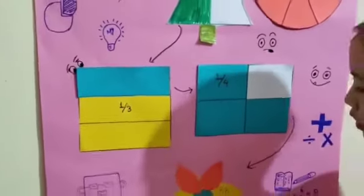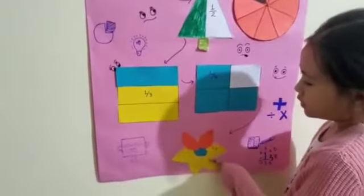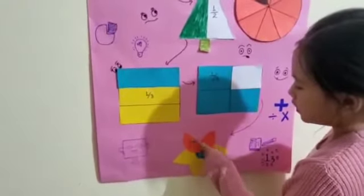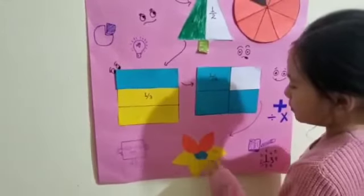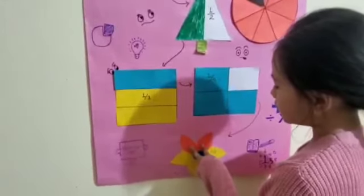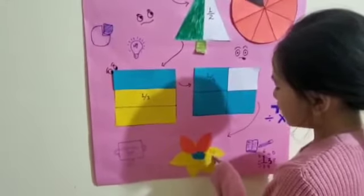The fifth one — you can see a pretty flower which has six petals, but two petals are orange. So it is two by six.